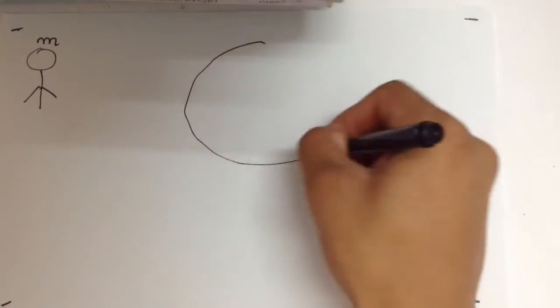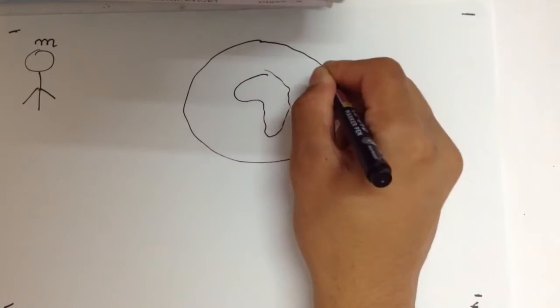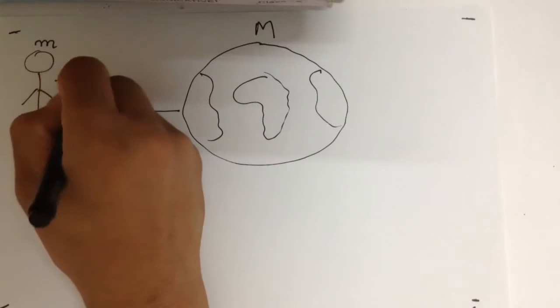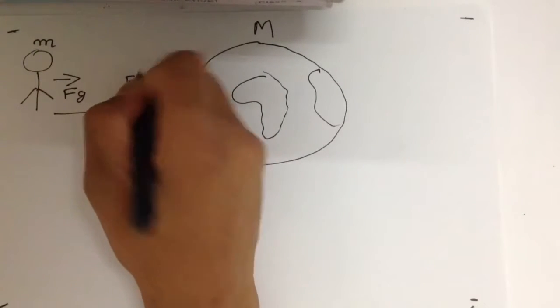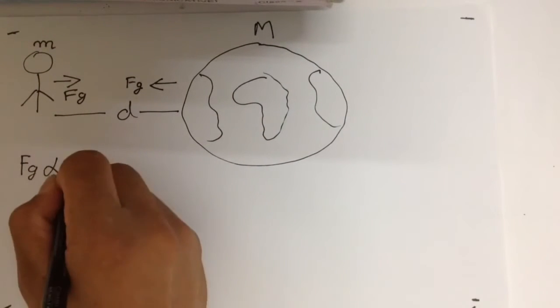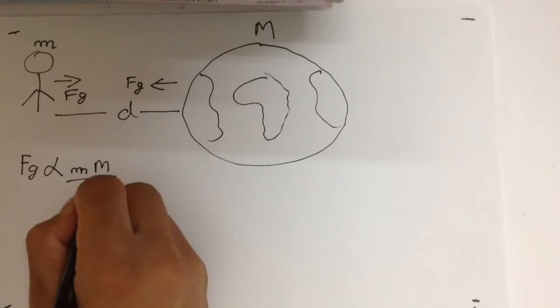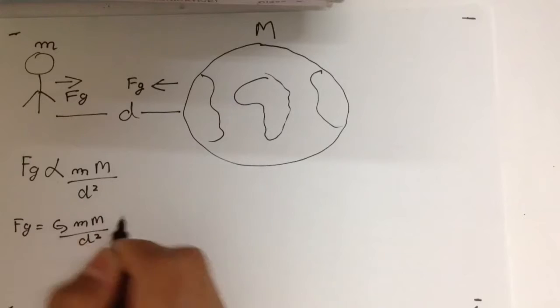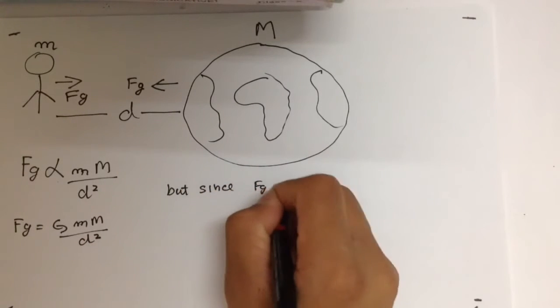Consider an eyeless and legless you with mass m, and the massive Earth with mass capital M. Let distance between you and Earth be D. Then the Earth pulls you with the force FG towards it, and so do you. Now, this force is proportional to the product of masses of bodies, in this case you and Earth, divided by the square of distance between them. Removing the sign of proportionality, we get capital G, or the gravitational constant.